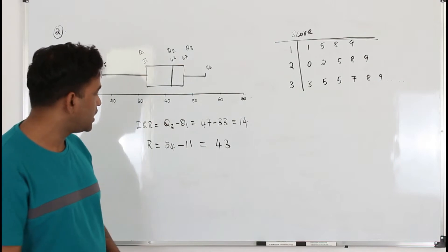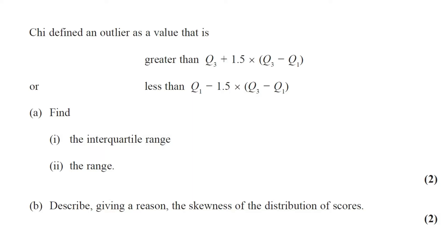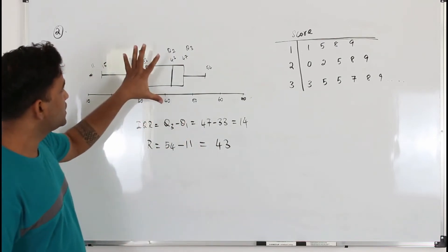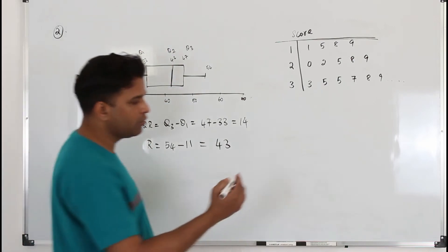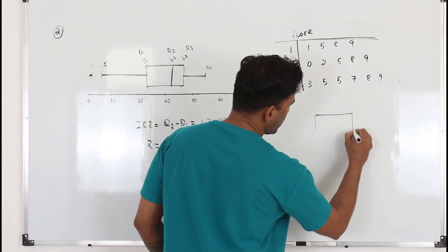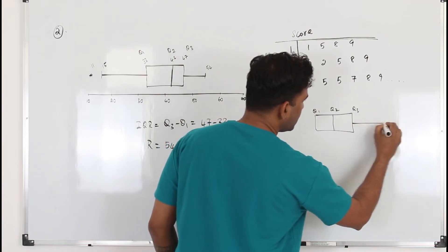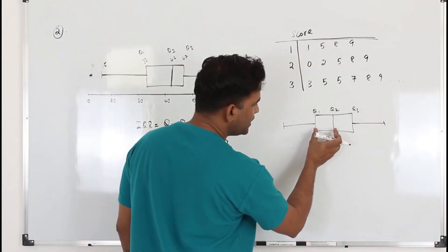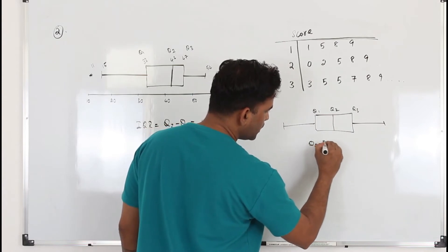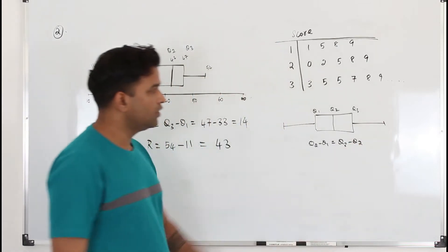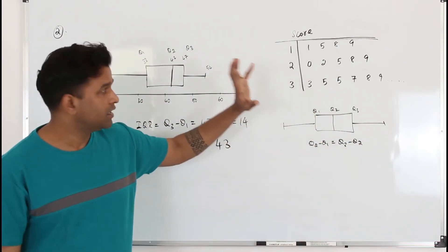Part B: describe, giving a reason, the skewness of the distribution of scores. This question carries two marks. To describe the skewness using a box and whisker plot, remember: when Q2 is exactly in the middle between Q1 and Q3, the distance Q2 minus Q1 equals Q3 minus Q2, meaning the data is symmetrical.